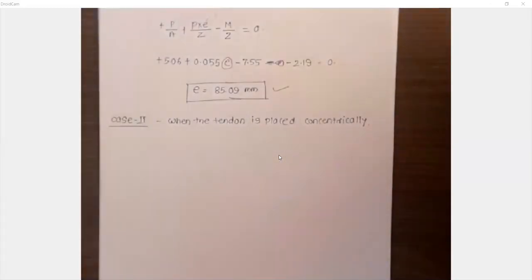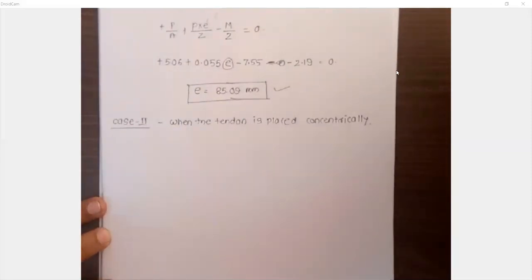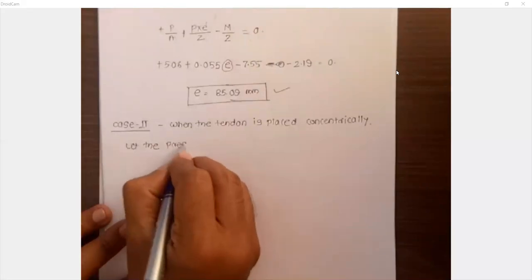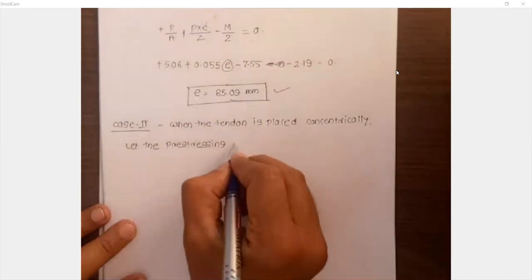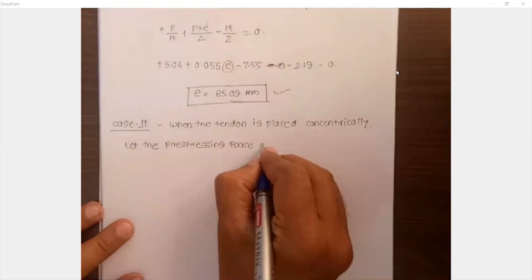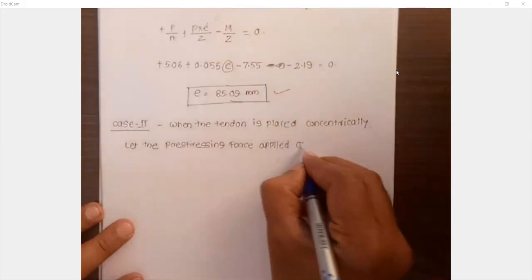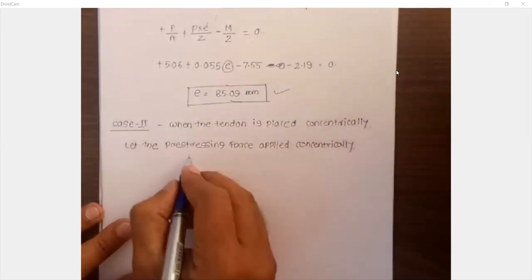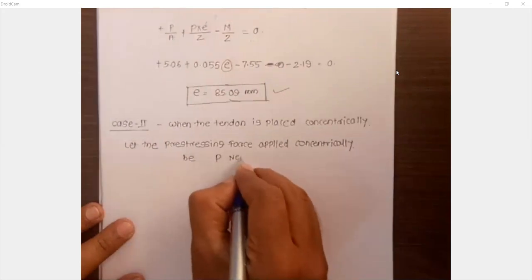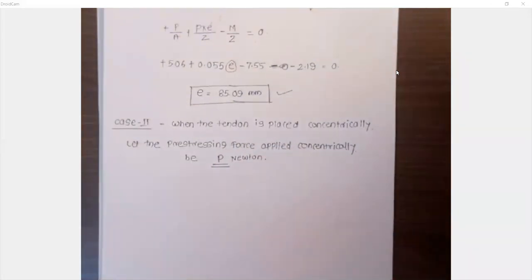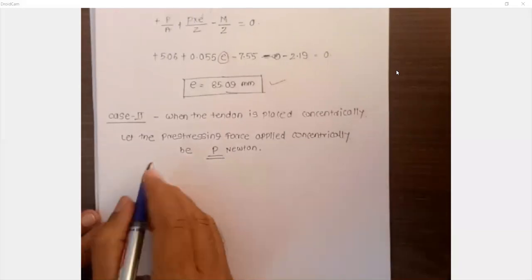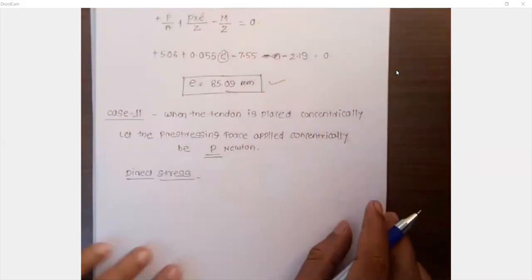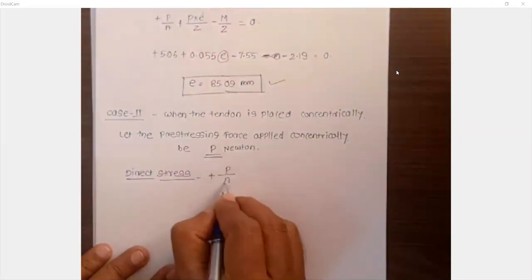Let the pre-stressing force applied concentrically be P Newton. We have to assume that the value of pre-stressing force is P. Now we have to calculate the direct stress first. Direct stress is always P by A, as you know.